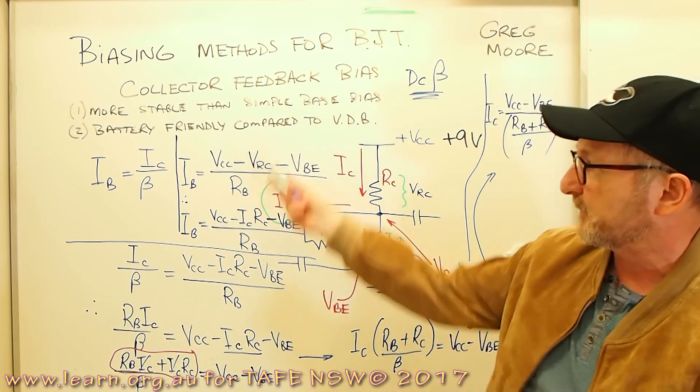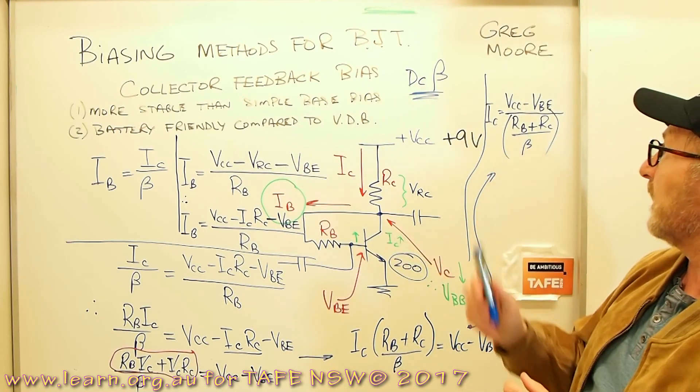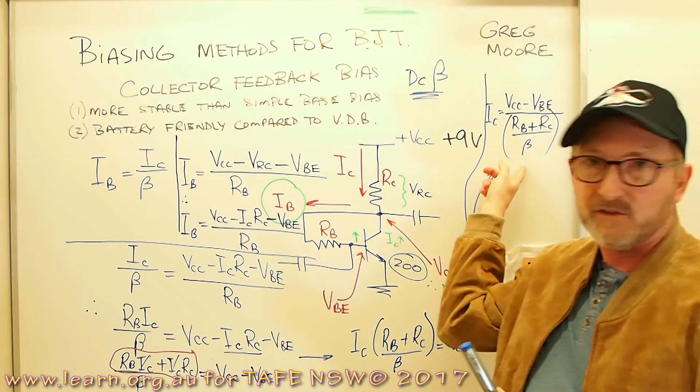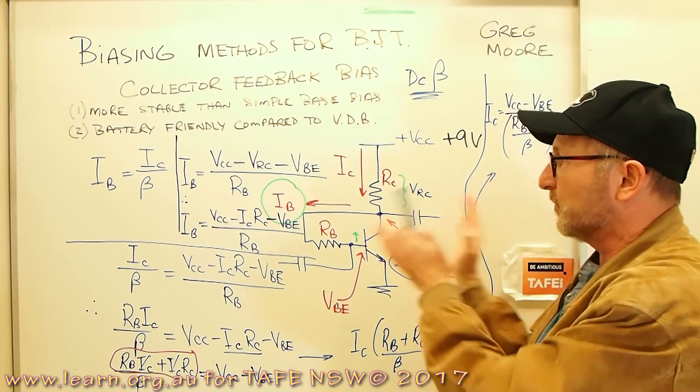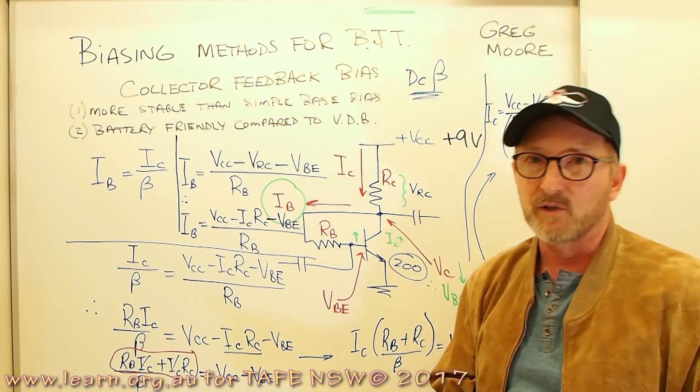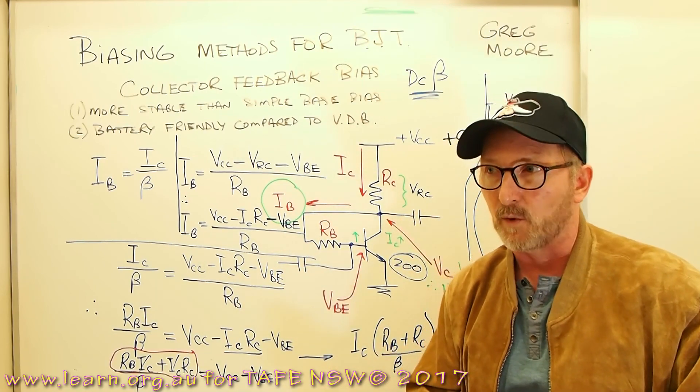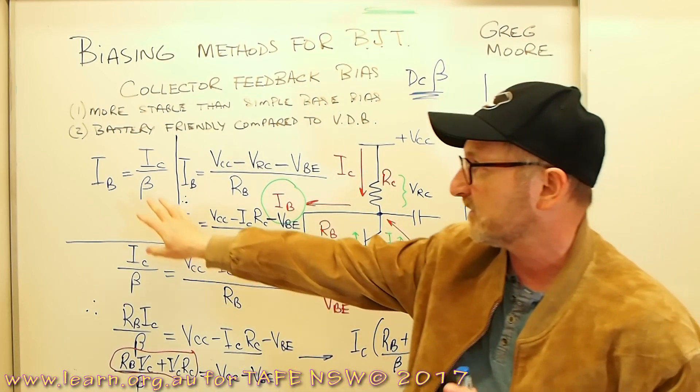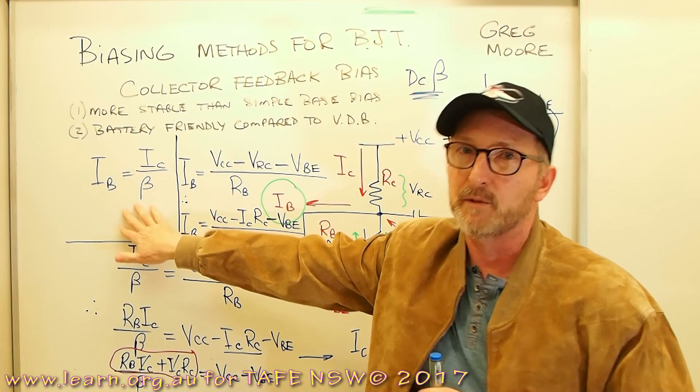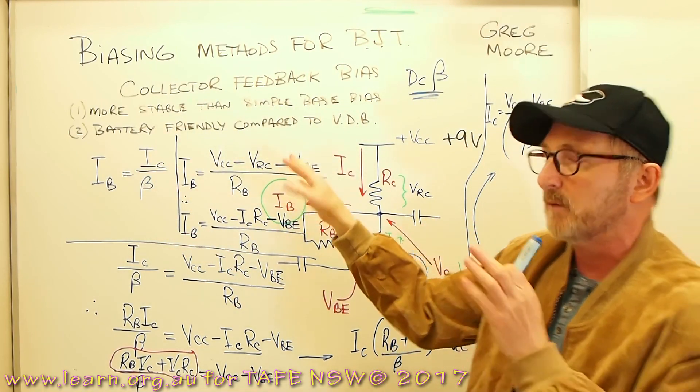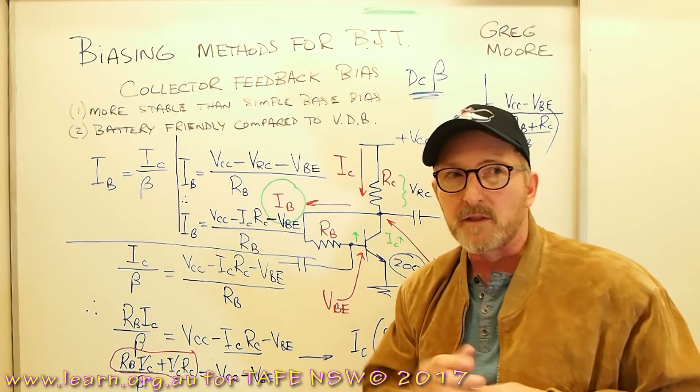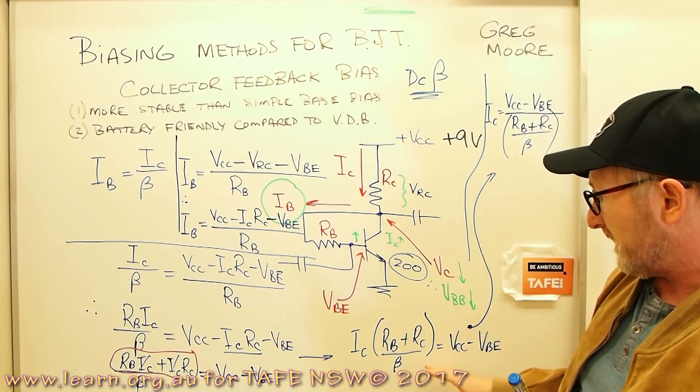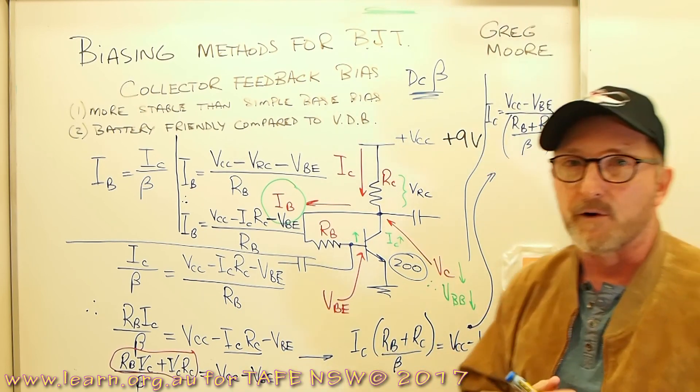A little bit of maths that we had to do there to come up with the equation, but of course, an equation like that, you'll be able to find in a textbook or online to suit that circuit. If you're not good at maths, hey, just go hunting for the equation. But if you're a little bit savvy at maths, you know, start off with, we can work out IB that way, or we can work out IB that way, let's start swapping some things around and see what the commonality is, and then eventually we came up with the final equation.